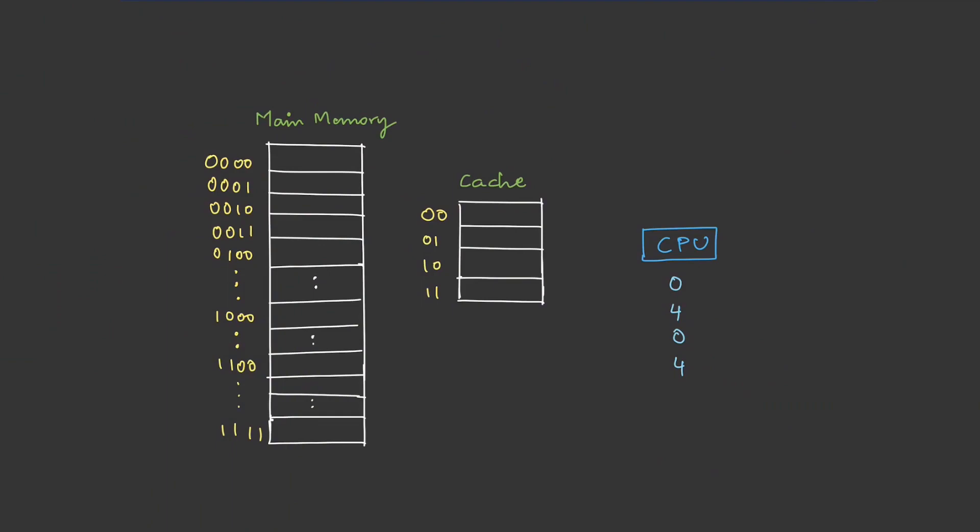For this, I will take this particular example. Here we have a main memory, a cache, and CPU is generating some requests. So it is asking for these blocks. Actually, block 0, block 4, block 0, and block 4. Initially, the cache is empty.